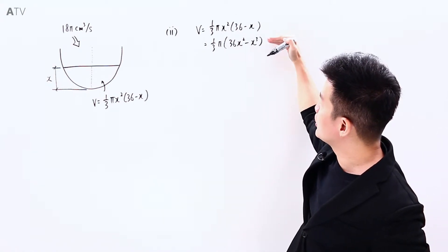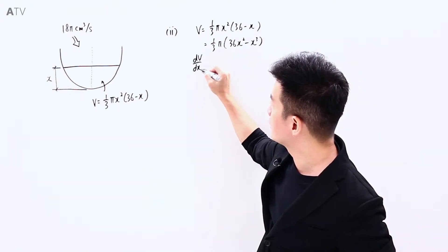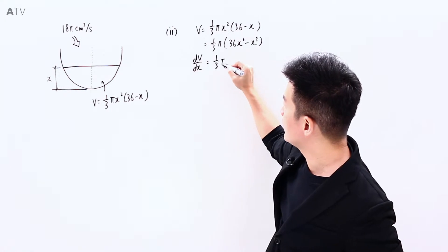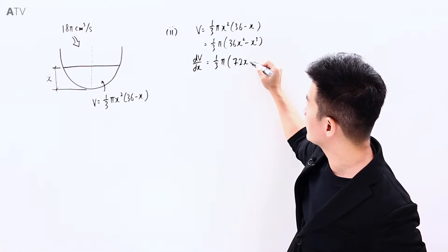...equal to (1/3)π, differentiating this it is going to be 36 times 2, 72x, minus 3x². So this is my expression for dV/dx.